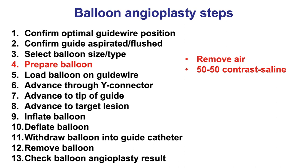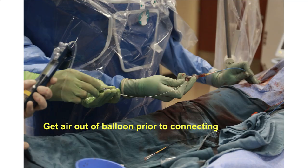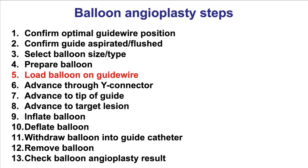The balloon is then prepared by removing the air using a 50-50 contrast-saline ratio. It is important to get the air out of the balloon prior to connecting with the inflating device, because in case of rupture, if there is air in the balloon, that will lead to vessel embolization and may also be more likely to predispose to perforation.